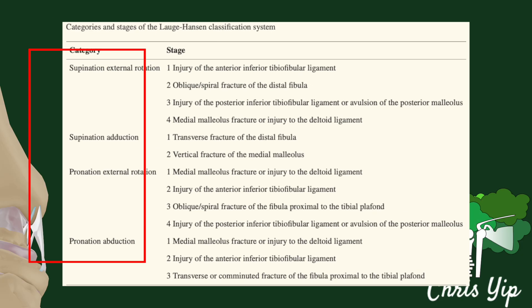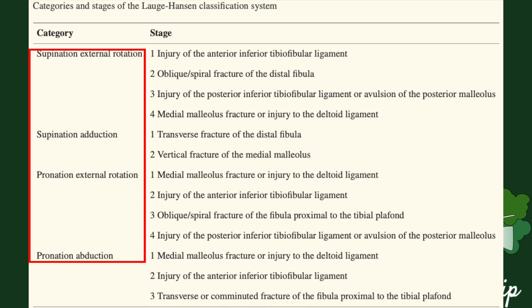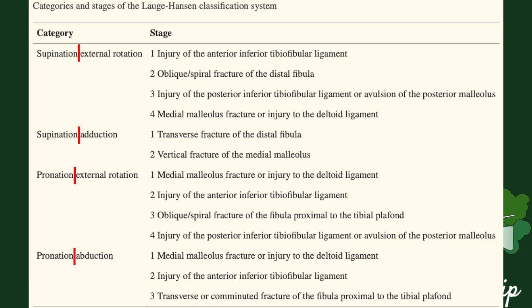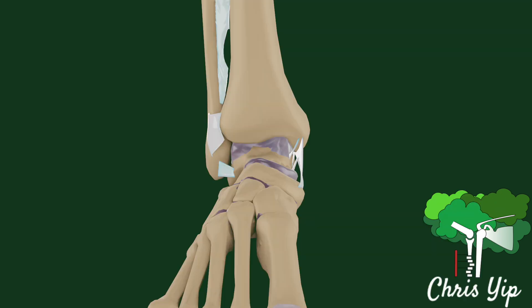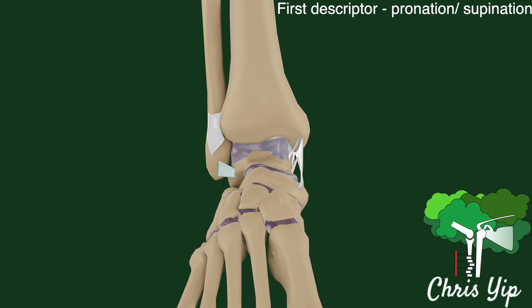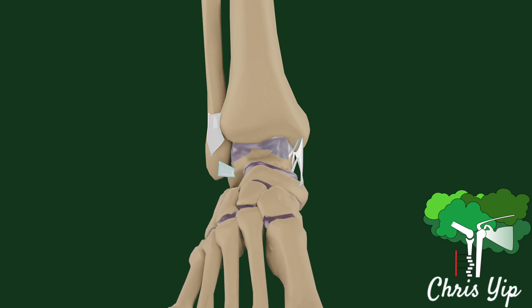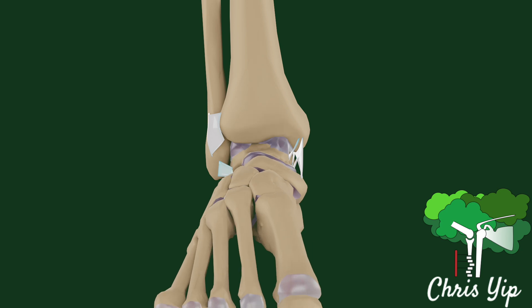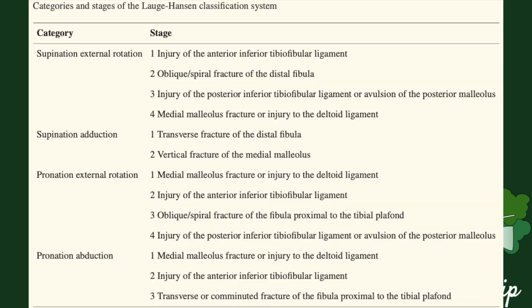There are four main categories of fracture morphologies, each described using two descriptors. The first descriptor describes the position of the foot at the time of the traumatic event, which can either be in supination or pronation. The second descriptor describes the direction of the force that is deforming the joint. In each category, each fracture morphology is described in stages, in the order in which the fractures occur, depending on the size of the deforming force.